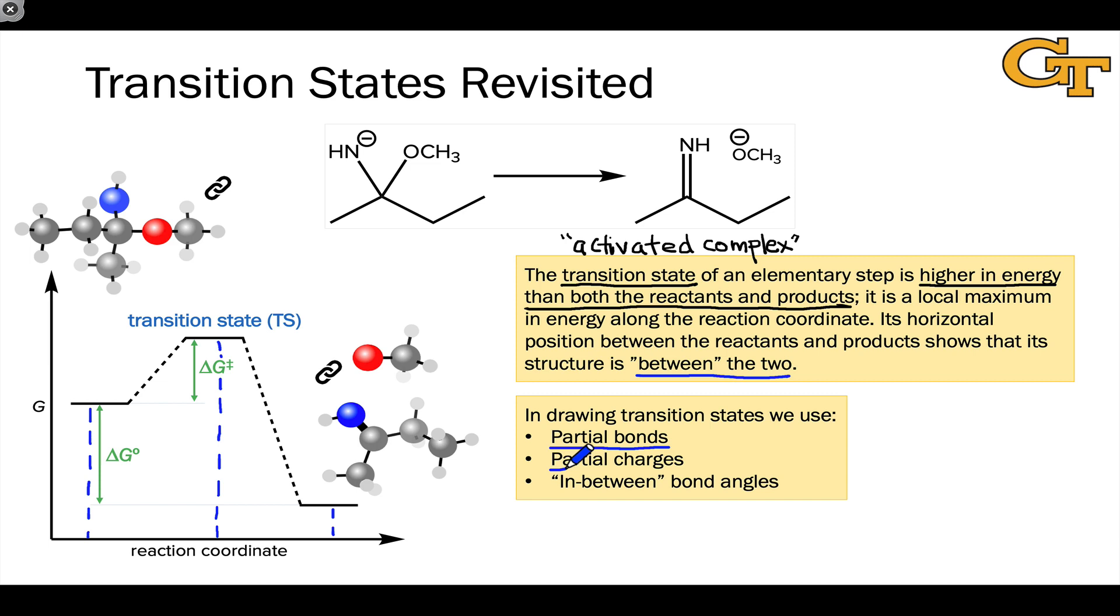Partial charges: if charge is coming in or disappearing from an atom in the course of an elementary step, we have to represent a charge between, say, zero and plus one or between negative one and zero. We do that using delta plus for a charge between zero and plus one, and delta minus for a charge between zero and minus one. Partial bonds and partial charges are extremely common in transition states.